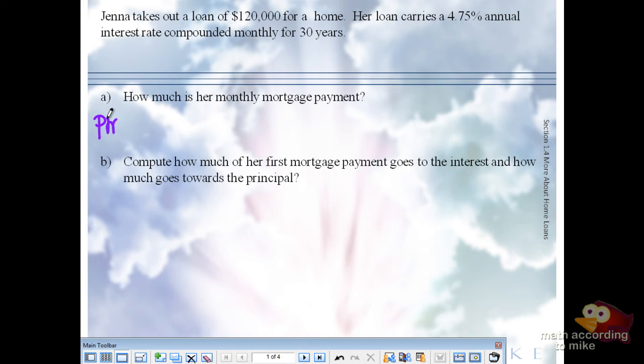So your PMT, your payment, will equal to... What's your PV? Good. R? Good. N? Careful. 12.